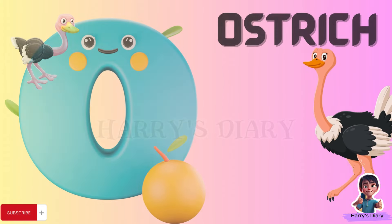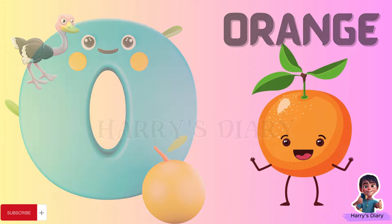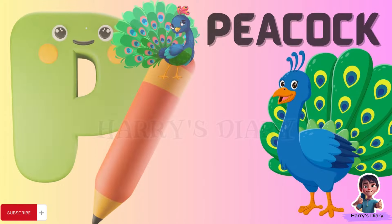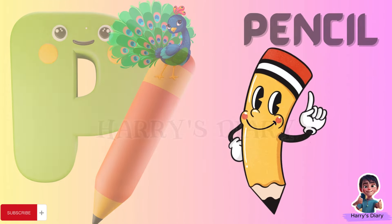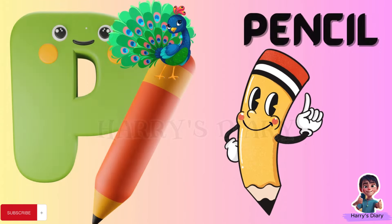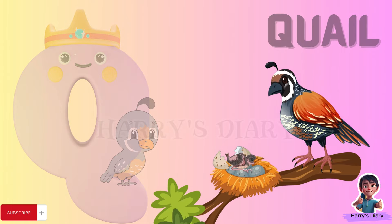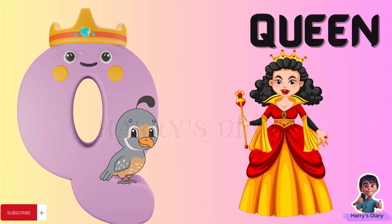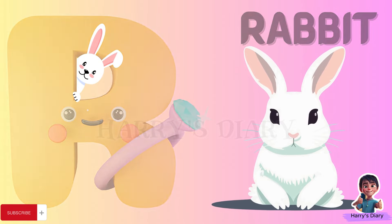O for ostrich. O for orange. P for peacock. P for pencil. Q for quail. Q for queen.